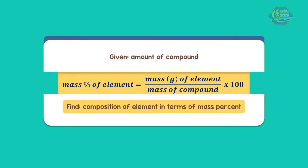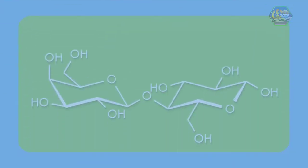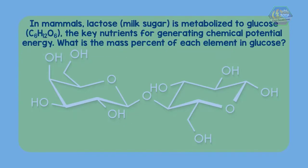Now for another problem. In mammals, lactose or milk sugar is metabolized to glucose, the key nutrient for generating chemical potential energy. What is the mass percent of each element in glucose?